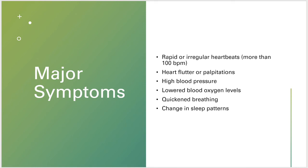Some of the ones that involved the heart were a rapid or irregular heartbeat, specifically over 100 beats per minute, heart flutters or palpitations, high blood pressure, and lowered oxygen levels in the blood. On the pulmonary side of things, there is quickened breath or difficulty breathing, and there is also a possible change in sleep habits.